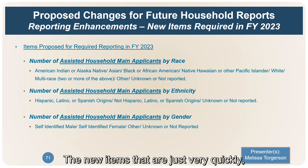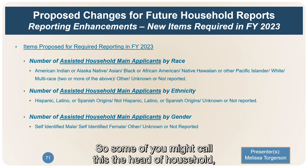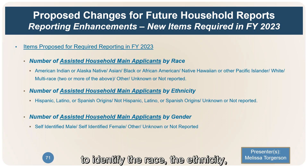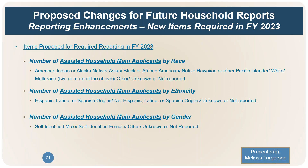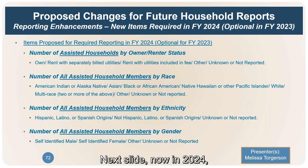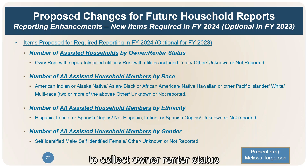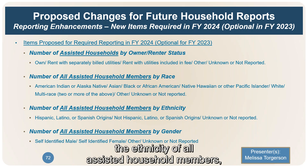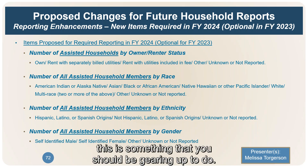The new items proposed: you'll be asked to report on the Assisted Household Main Applicant (sometimes called the Head of Household). You need to be able to identify the race, ethnicity, and gender of the main applicant of each household. Beginning in 2024, this expands to include owner-renter status of served households, and the race, ethnicity, and gender of all assisted household members — not just the main applicant. For those not yet collecting household member data in your system, this is something you should be gearing up to do.